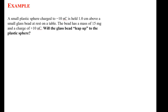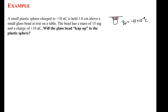To tackle this problem, let's first sketch a picture. I'll draw the plastic sphere and indicate that this sphere has a charge q sub p — p corresponding to plastic, and q is our arbitrary variable representing charge. The charge of the plastic sphere is equal to minus 10 nanocoulombs, which is minus 10 times 10 to the minus 9 coulombs. This sphere is fixed in place, so I'll indicate that by drawing a structure holding it in place.